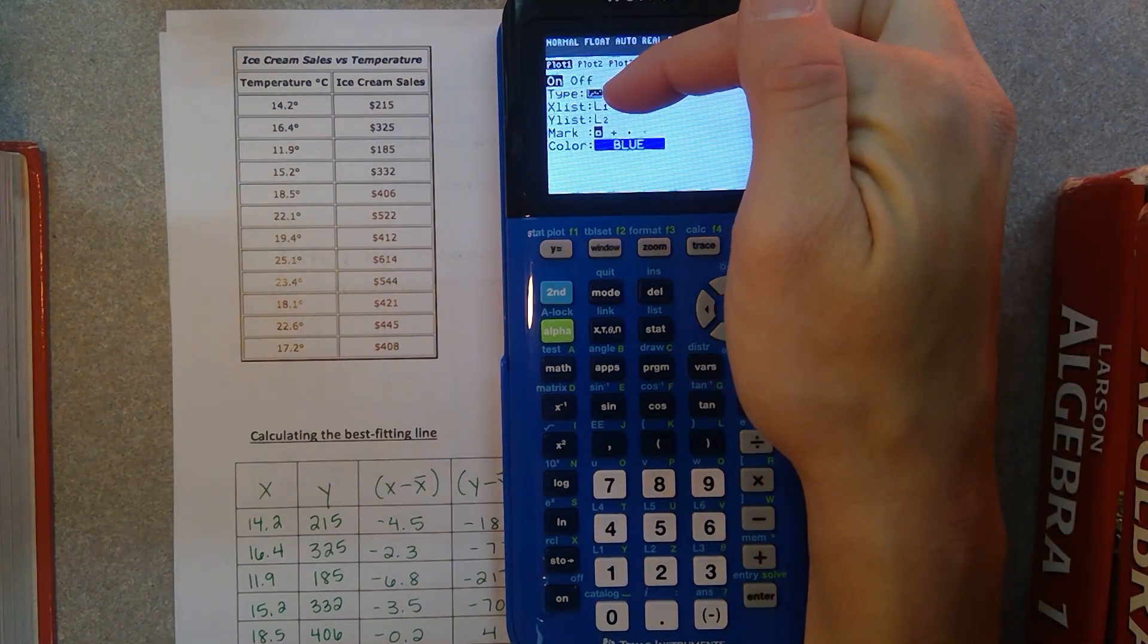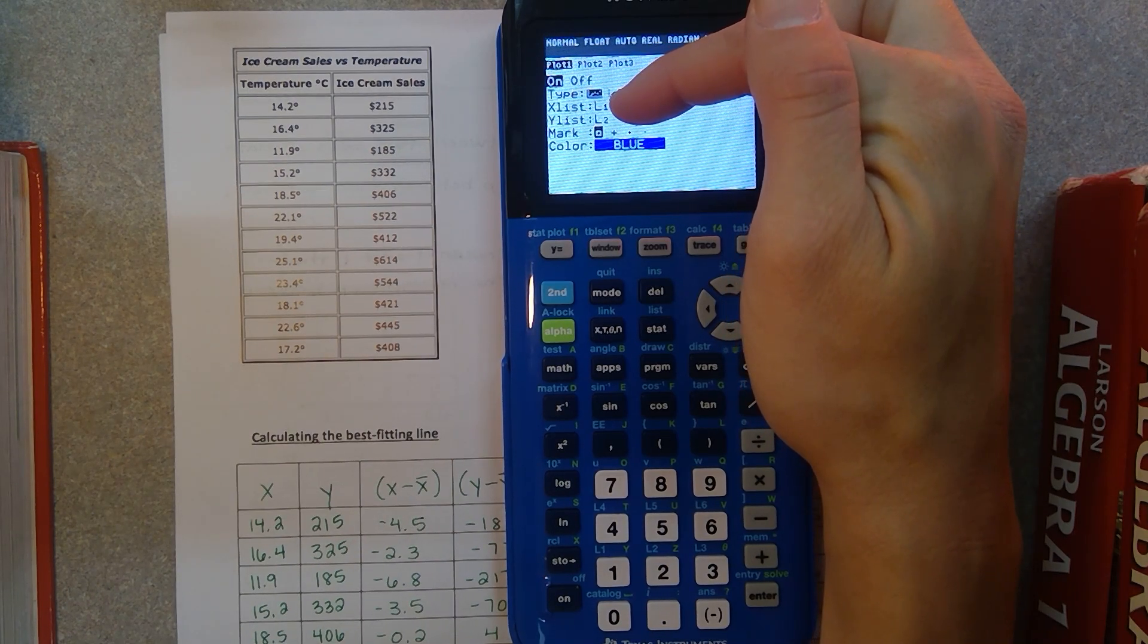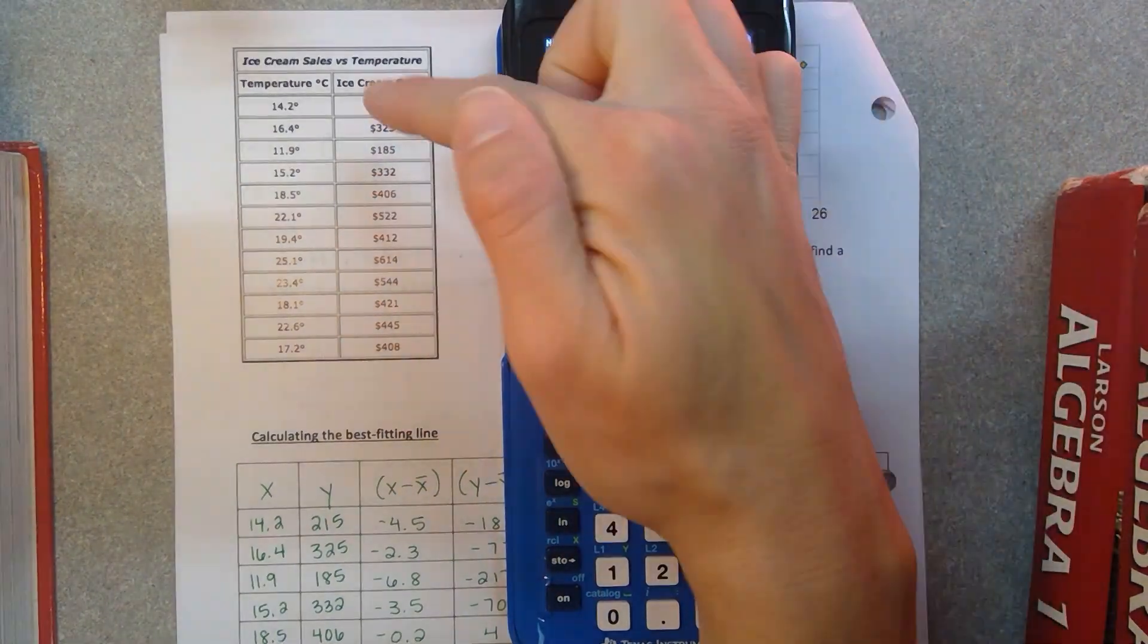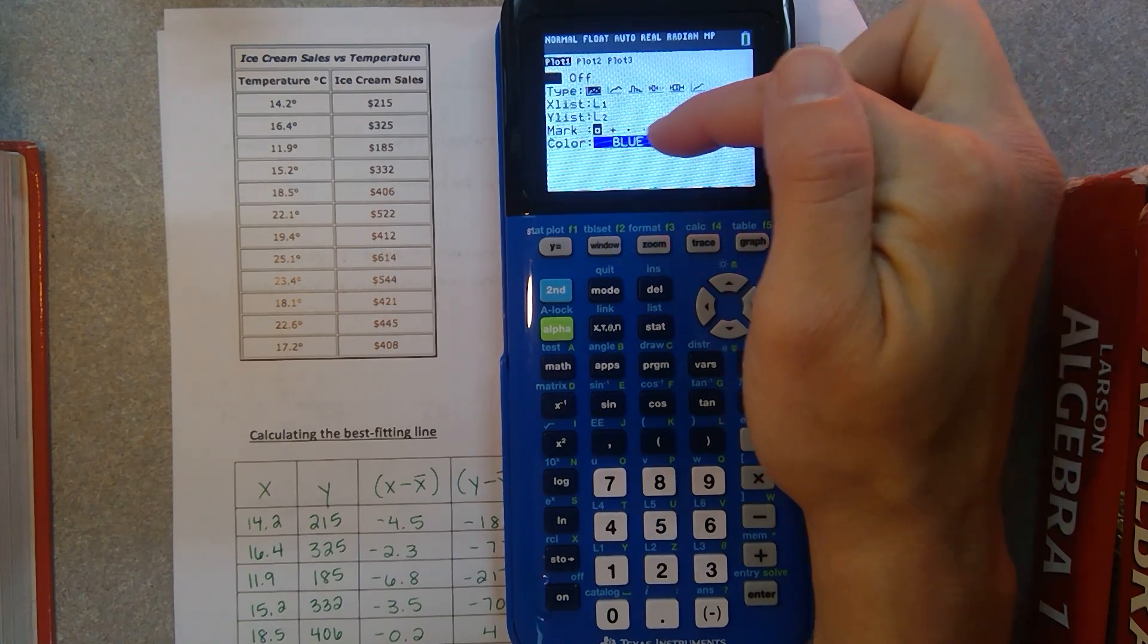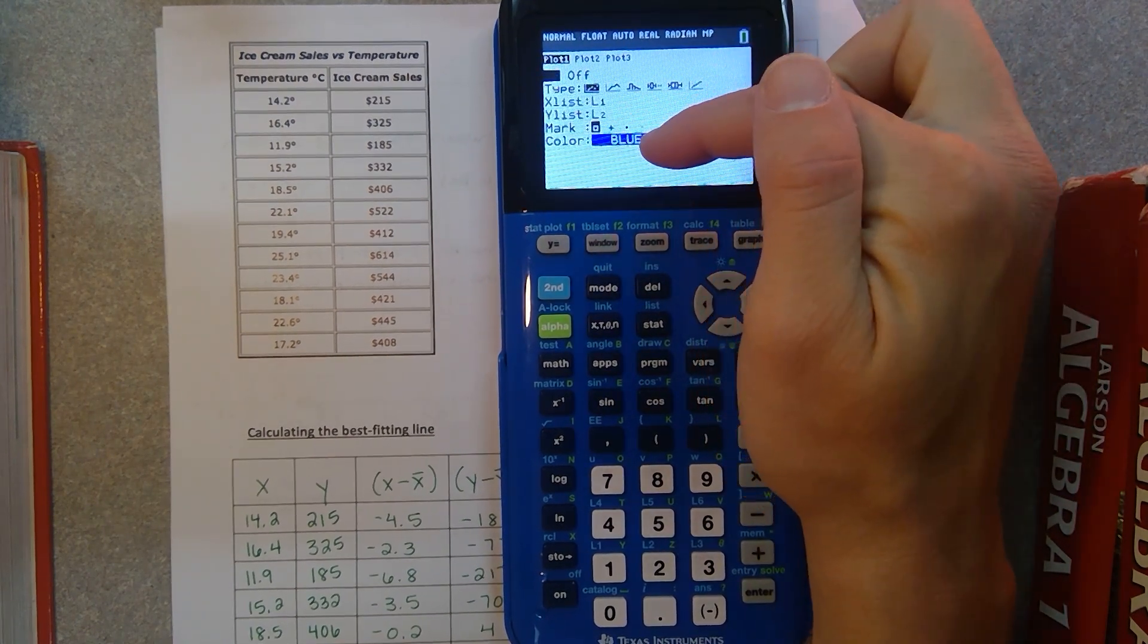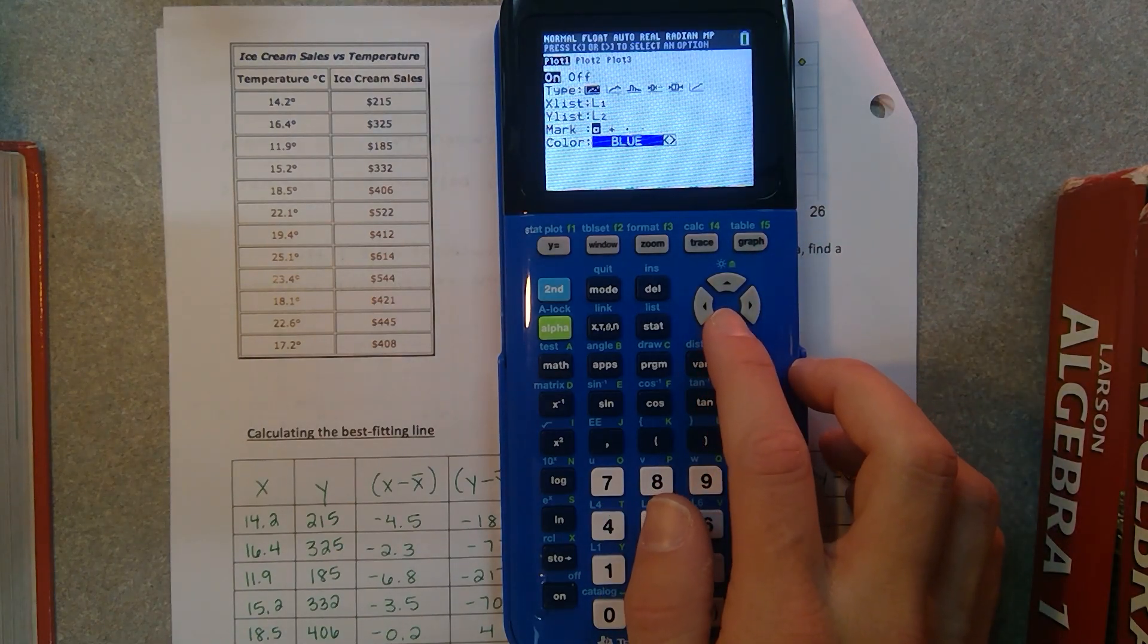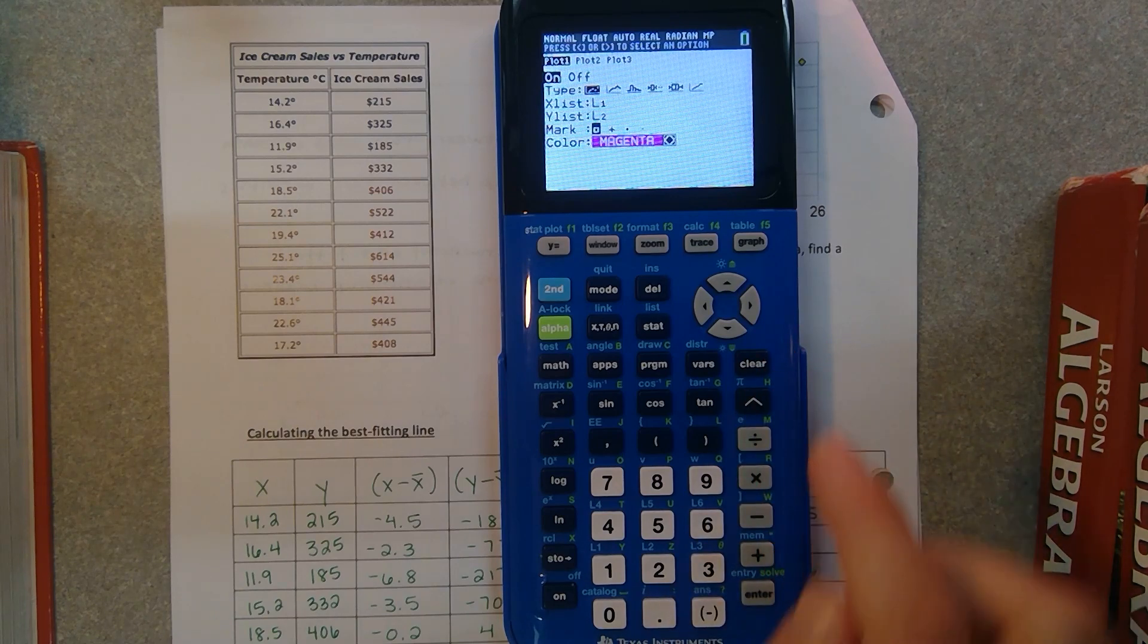So we just want to deal with the first one, hit enter, and we need to turn it on, hit enter. This option type, basically we're going to do a scatterplot. That's the first option. Your X variable is pulling from list one. That's where we entered our temperatures. Your Y variable is pulling from list two. That's where we entered our ice cream sales. The mark is just literally what it's going to plot. You can choose that yourself. And then the color for the line, make it whatever you want. I can scroll and turn it magenta if I wanted to.